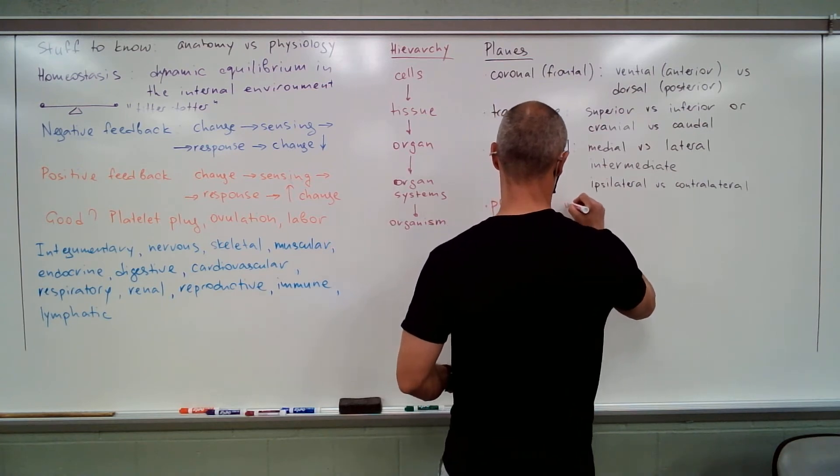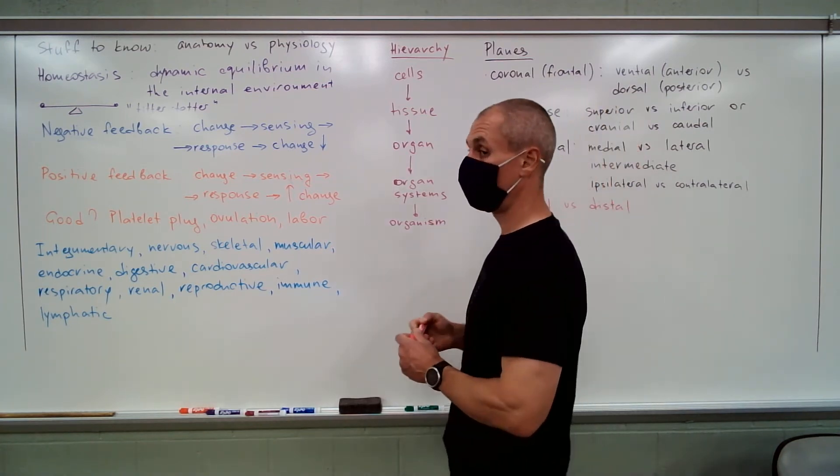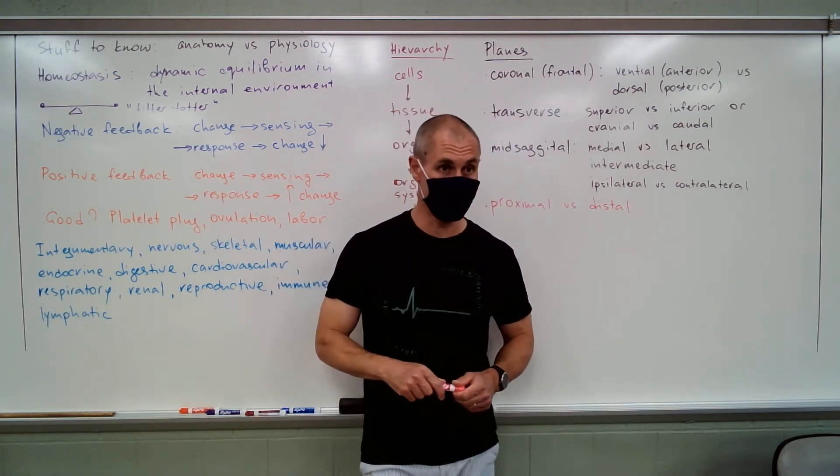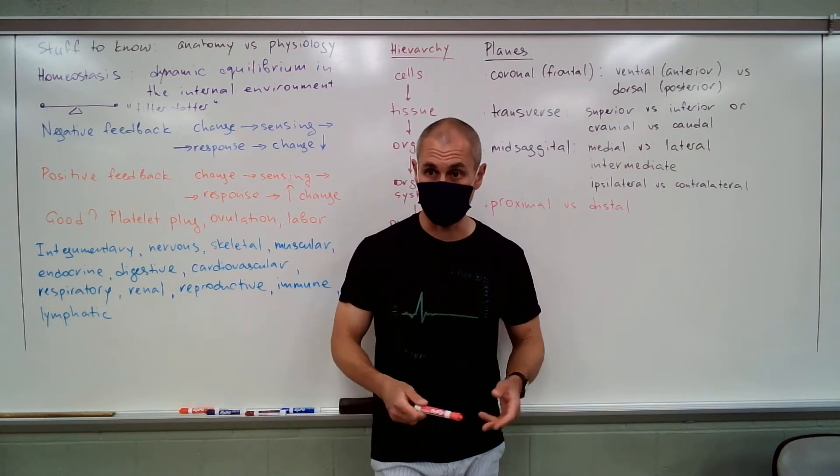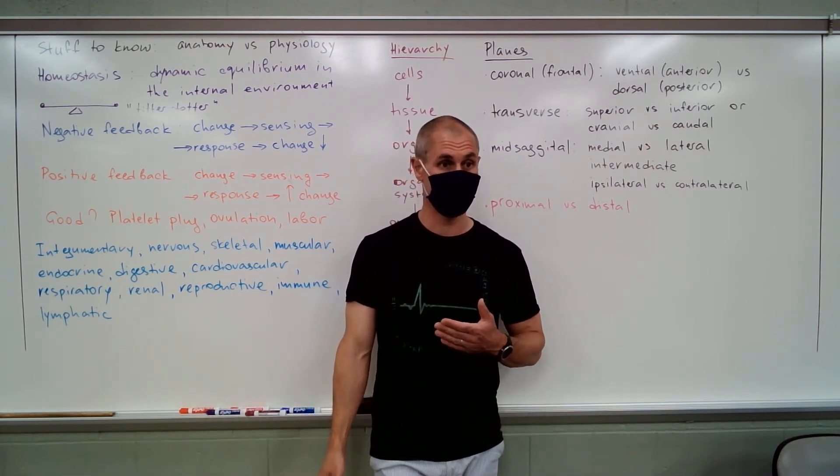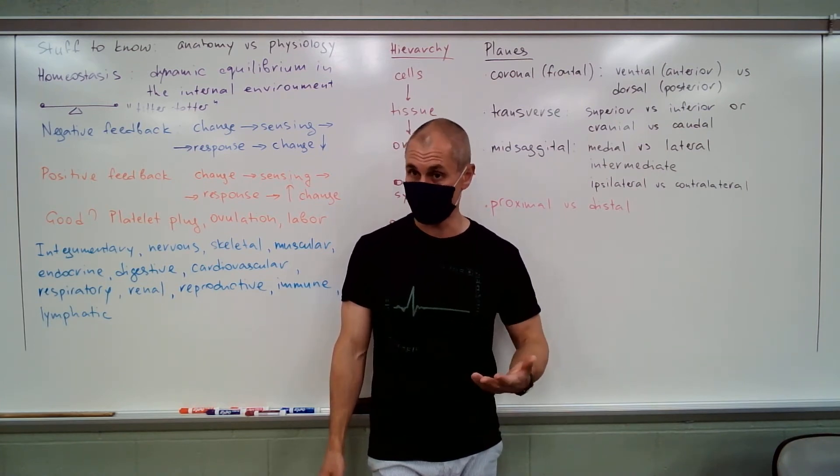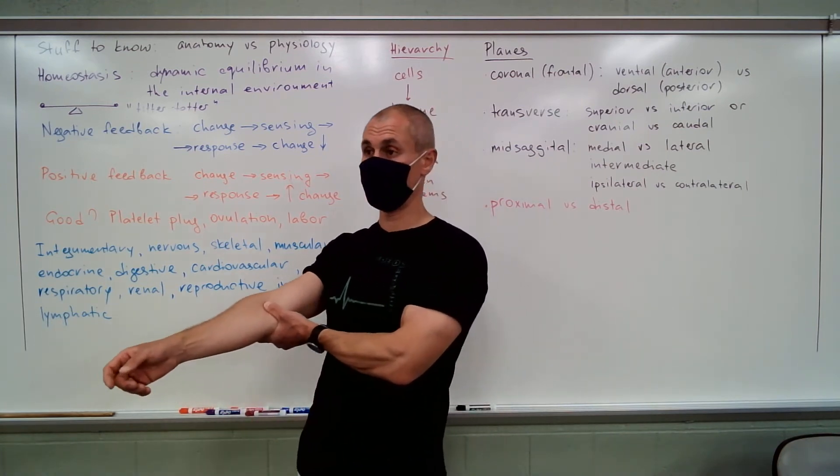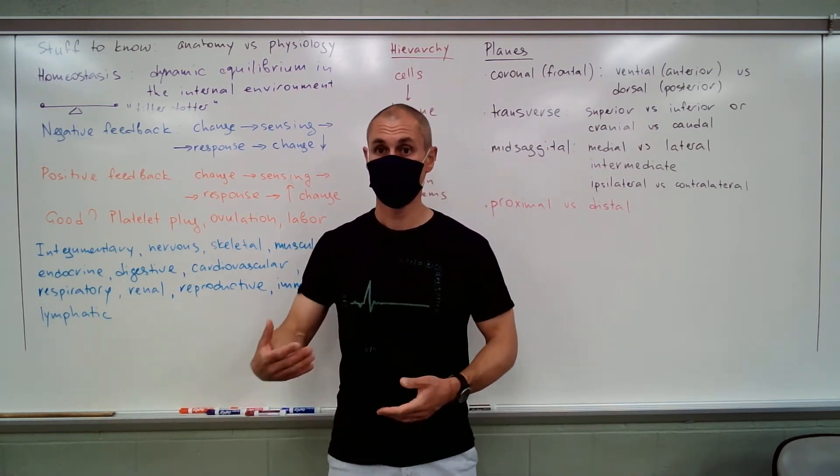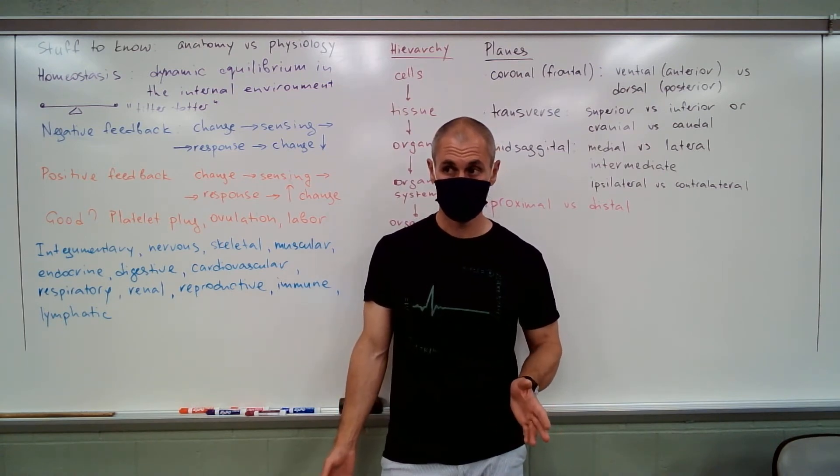Proximal versus distal. So humans have four limbs. Head is not one of them. Two arms, two legs. Proximal means closer to the attachment, point of attachment. Distal means farther. So your elbow is proximal to your hand. But your foot is distal to your knee. Good? Clear?